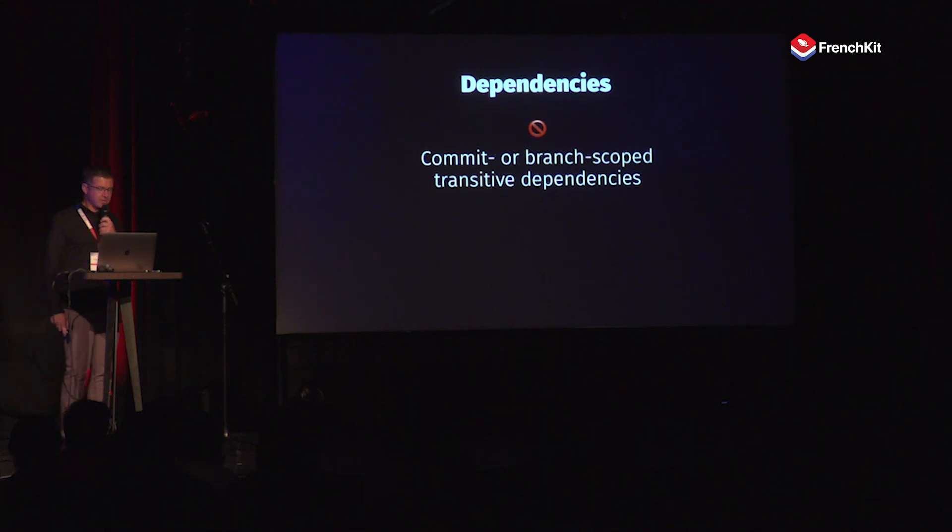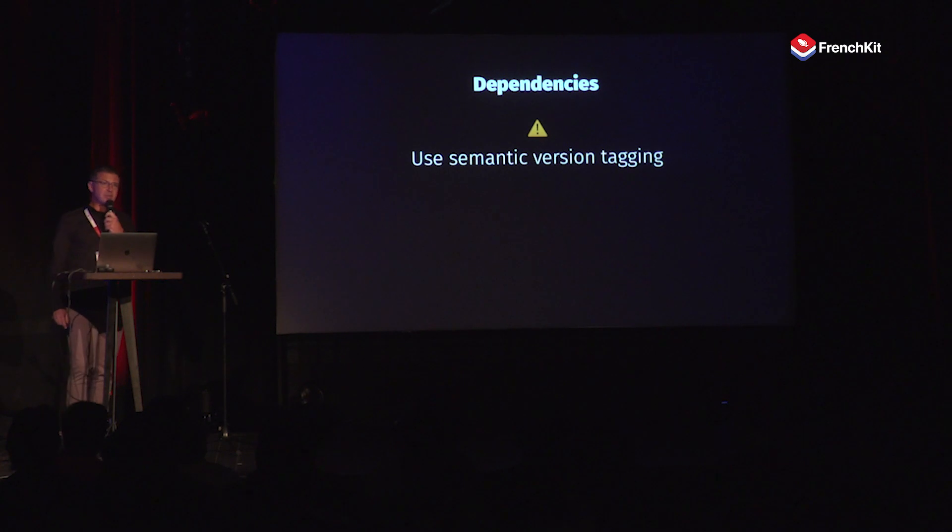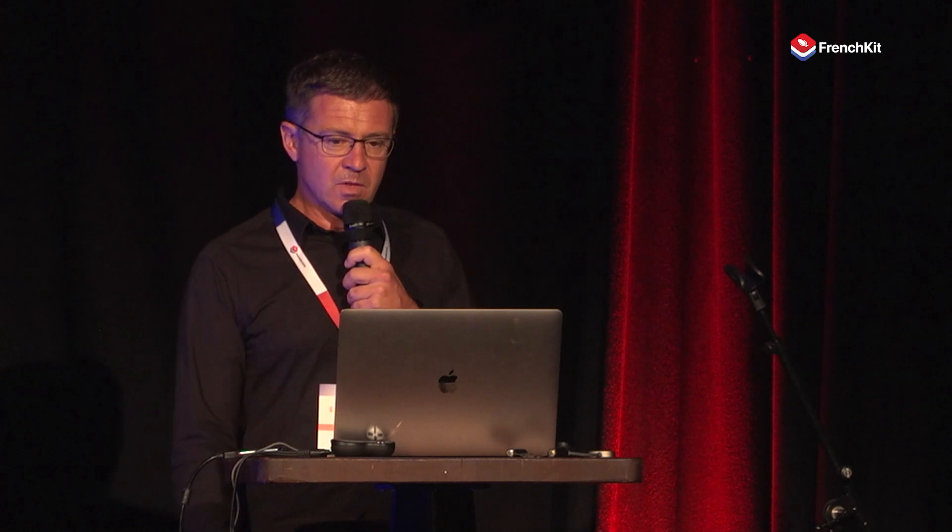Now let's talk about dependencies. SPM handles dependencies quite well but there are a few details to pay attention to. When including your library in your application with SPM, you can pull it from a branch or a specific commit, but if your library itself has branch or commit-specific dependencies you're in trouble — transitive dependencies have to come from their own master branch. This is a limitation of SPM. Also, SPM relies on semantic version tagging, so make sure you have good hygiene on this front. If SPM is taking a long time to update, it's usually a sign that semantic version tagging was messed up in your commits.